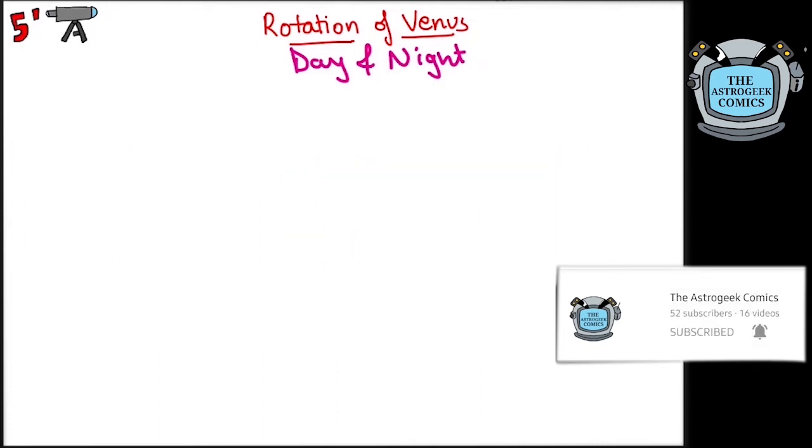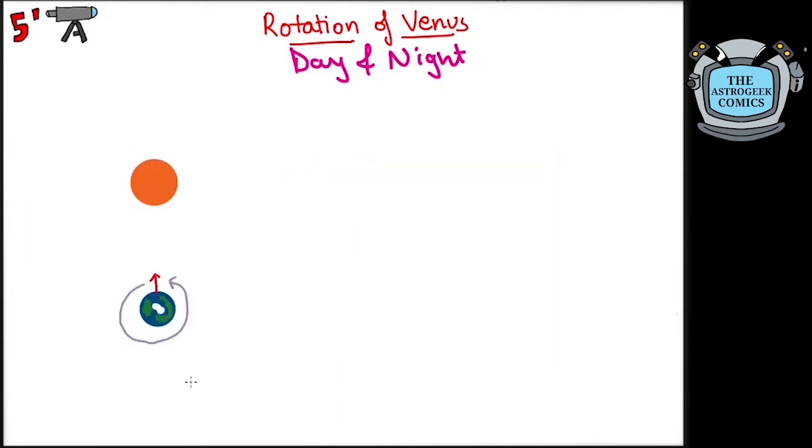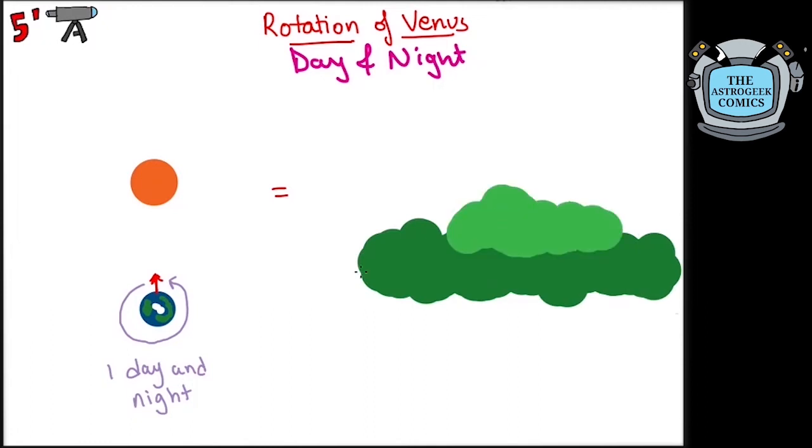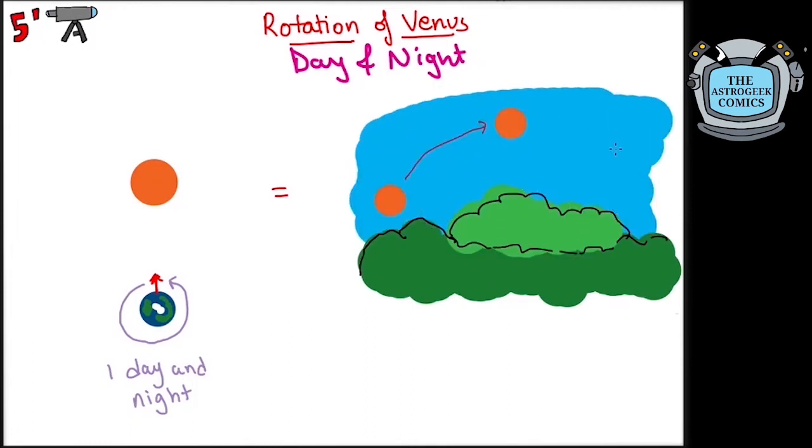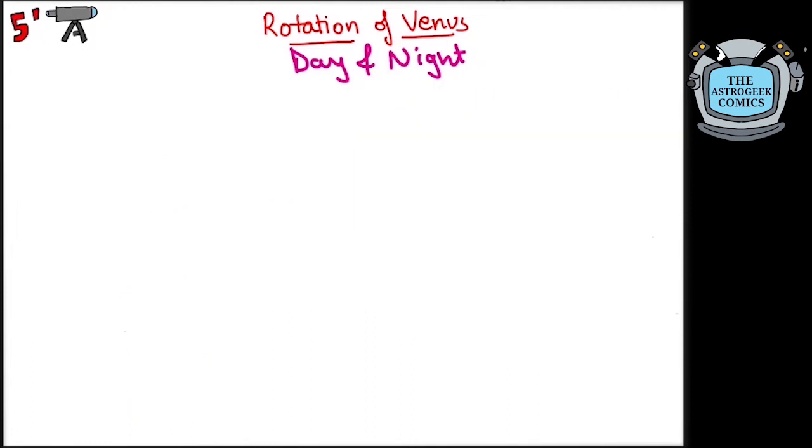But there is a technical difference. Day and night cycle is the time taken for the Sun to return to the meridian over a location on a planet after setting and rising. Rotation of planets, on the other hand, is measured with respect to distant stars and is the period the same side of the planet takes to face the reference star.